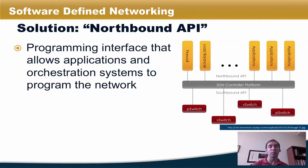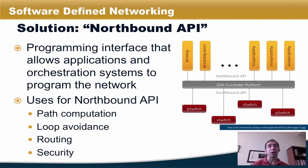The controller would be responsible for ensuring that those applications interact correctly. There are various uses for the northbound API including computing paths across the network that comply with intended policies, computing paths that avoid loops, performing routing and recovering from failures, and enforcing security policies.